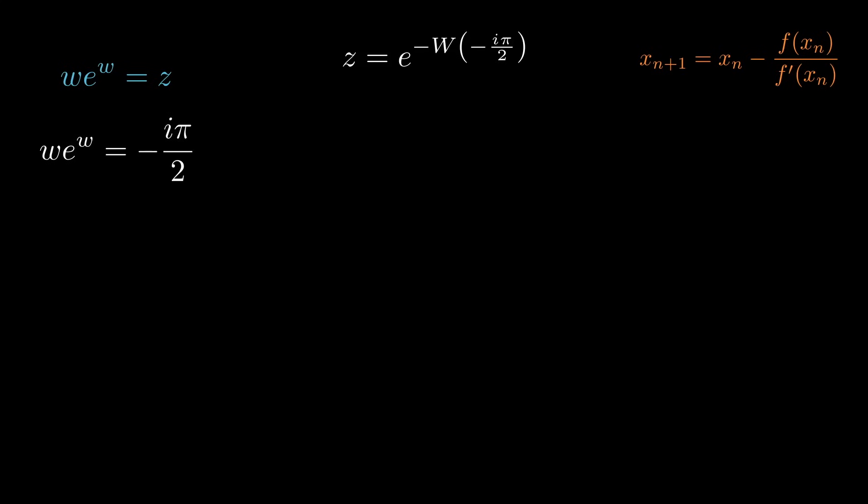The z in particular is the minus i pi over 2. I'm trying to figure out what would we plug in to W e to the W to output minus i pi over 2. And since Newton's method approximates roots or zeros, let's set this equal to zero. This is the function we plug into Newton's method.